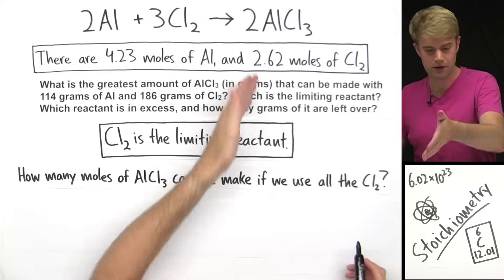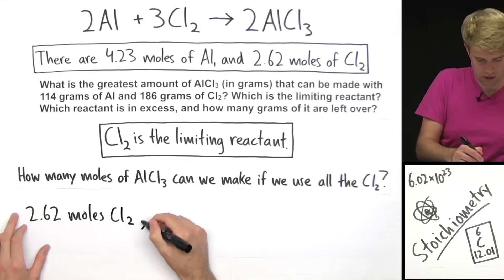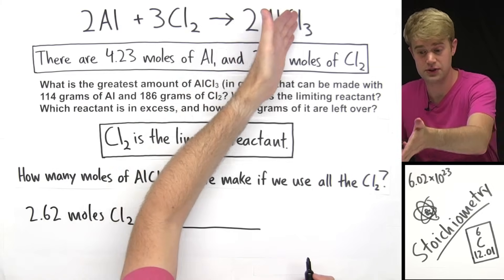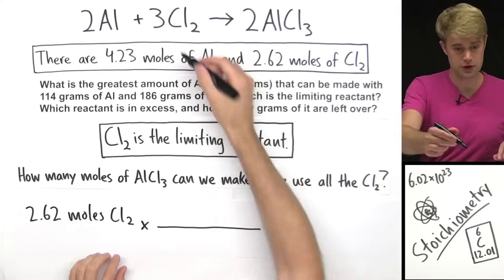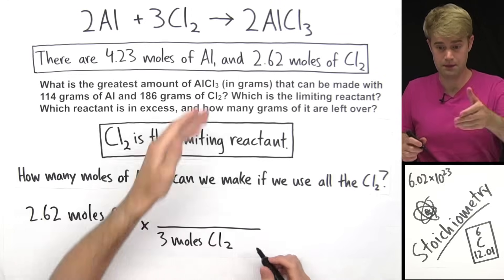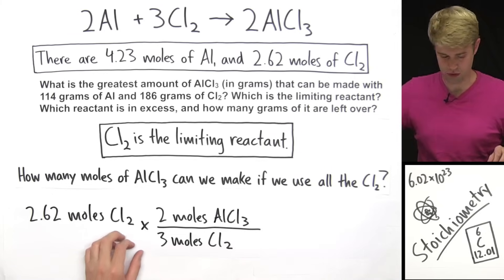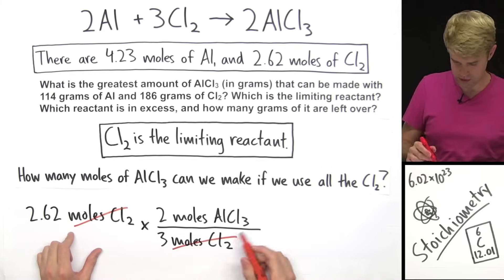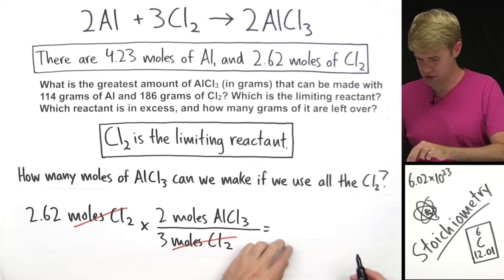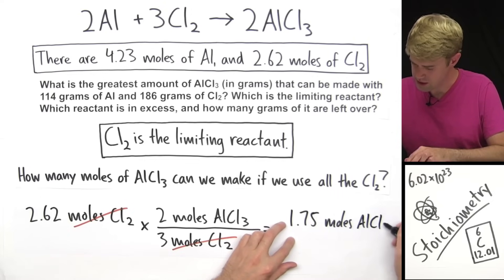Starting with all of the Chlorine that we have — 2.62 moles of Cl₂ — we multiply by the conversion factor showing the relationship between moles of Chlorine and moles of AlCl₃. Putting 3 moles Cl₂ on the bottom and 2 moles AlCl₃ on top, moles Cl₂ cancel out. The math gives us 1.75 moles of AlCl₃.